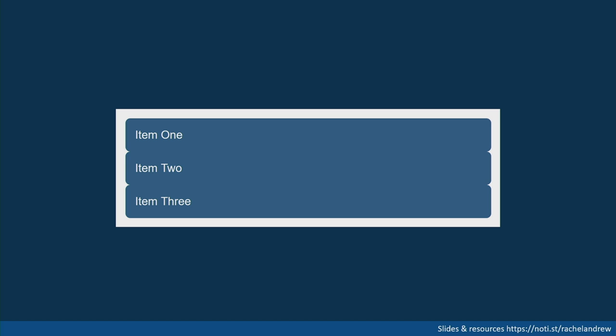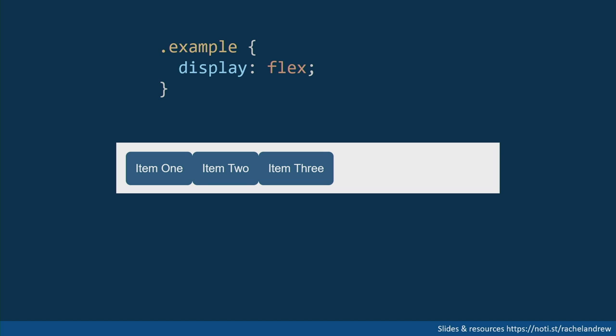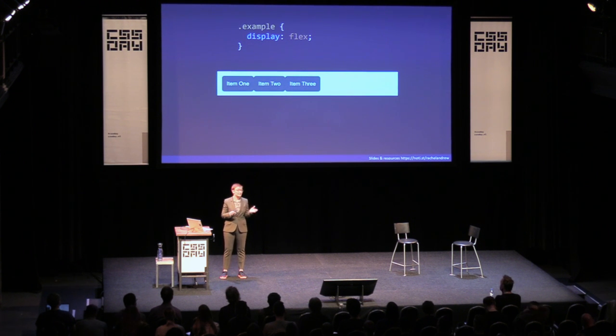Once we understand that we've got layout and our items are participating in the block formatting context, we better understand what it means to change the value of display to create a different kind of layout. My items here are displaying one below the other as block items. If I change the value of display on their container to flex, the items now display alongside each other — they're now flex items, not participating in the block formatting context but in a flex formatting context. That comes with some initial values: things display in a row by default, they're not stretching, they're all aligned to start, they're not stretching on the main axis.